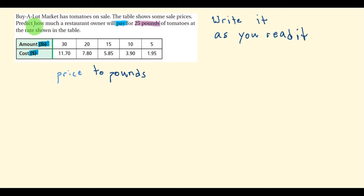Now let's read through this last sentence again. Predict how much a restaurant owner will pay for 25 pounds of tomatoes at a rate shown in the table. Well, off to the side, I'm just going to create a fraction bar, and I've got to think about it.